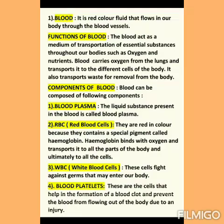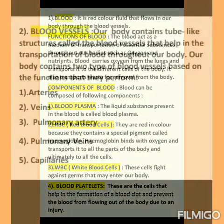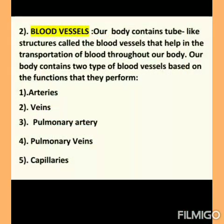The second component of the human circulatory system is blood vessels. Our body contains tube-like structures called blood vessels that help in the transportation of blood throughout our body. Our body contains two types of blood vessels based on the functions they perform.